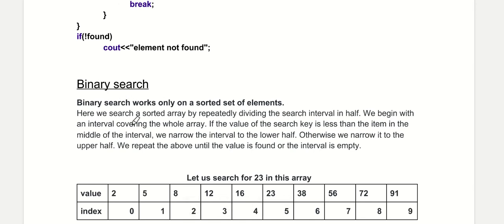Now let us come to binary search. Binary search only works on a sorted array. Here we search a sorted array by repeatedly dividing the search interval in half. We begin with an interval covering the whole array. If the value of the search key is less than the item in the middle of the interval, we narrow the interval to the lower half, otherwise we narrow it to the upper half. We repeat this until the value is found or the interval is empty.